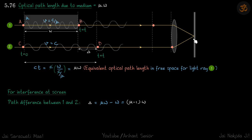Let's calculate what this path difference is. We take a time t where this point just exits the slab. Inside the medium, the velocity is c/μ, and the width of the slab is w, so the time taken for this point to travel through the slab is w divided by c/μ.